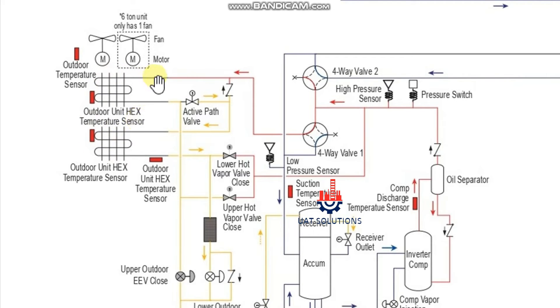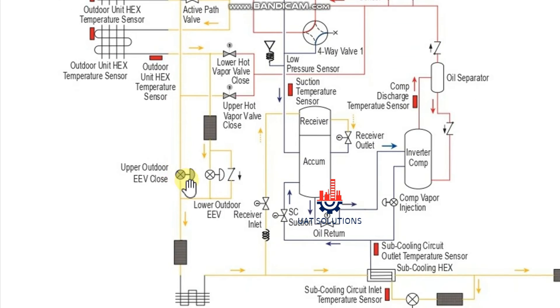In case the refrigerant temperature is higher than required, for extra condensation, active path valve will open and allow the gas to pass via lower outdoor coil. At liquid line of each condenser coil, there is an electronic valve which is used to control the refrigerant flow going to the indoor units.